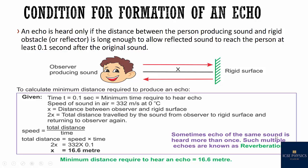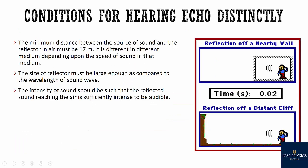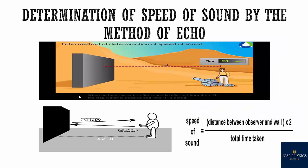Sometimes echo of the same sound is heard more than once. Such multiple echoes are known as reverberation. Now condition for hearing echo distinctly. First, the distance should be greater than 16.6 or greater than 17 meters. Then the size of the reflector must be large as compared to the wavelength of the sound wave. Then the intensity of the sound also should be high. If you make a whisper and wait to hear an echo, it won't be possible.